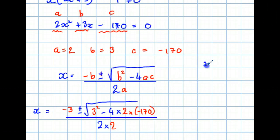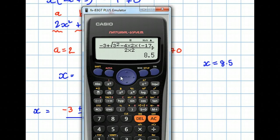So, one value of X is 8.5. What's the other value? Remember, there's generally two values. If I work backwards, if I use the replay button, I don't have to type everything in.